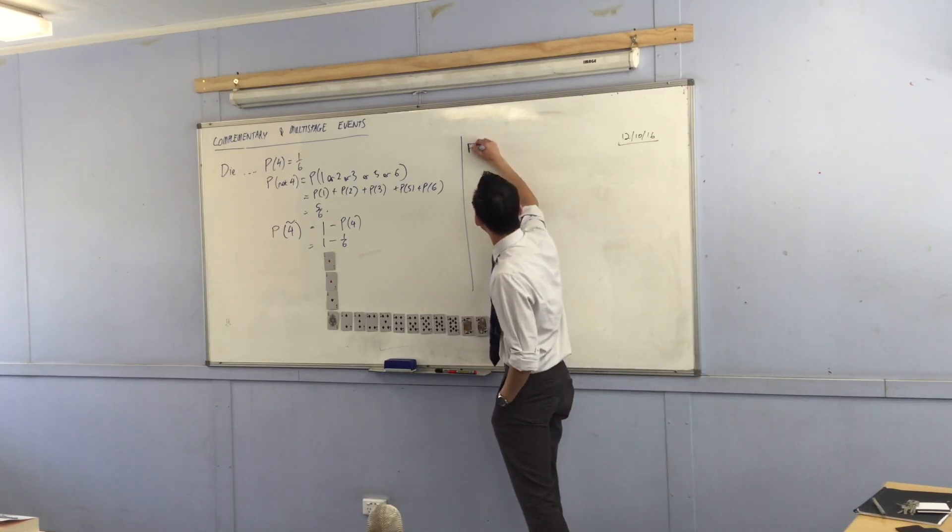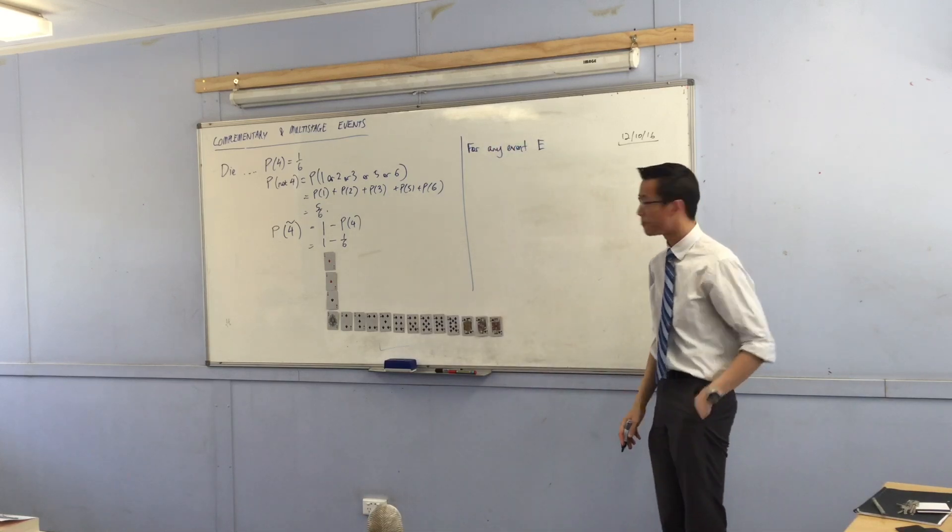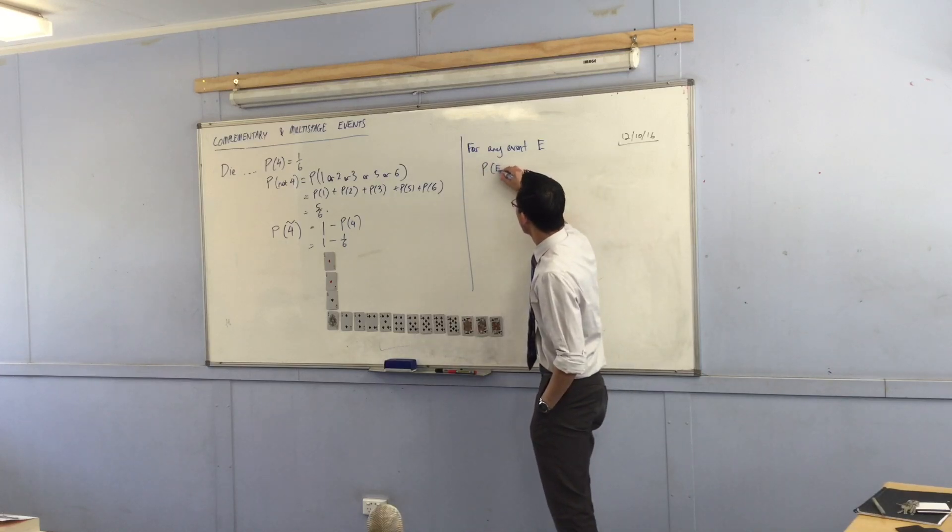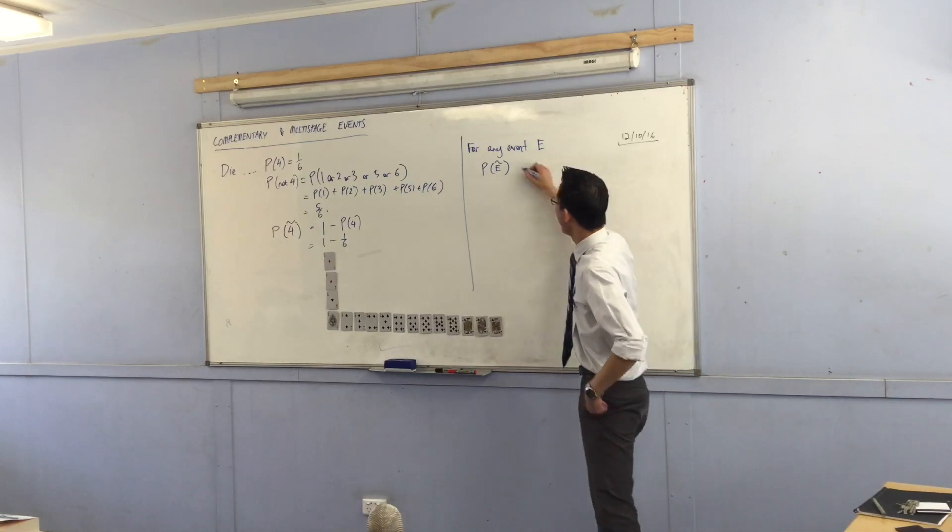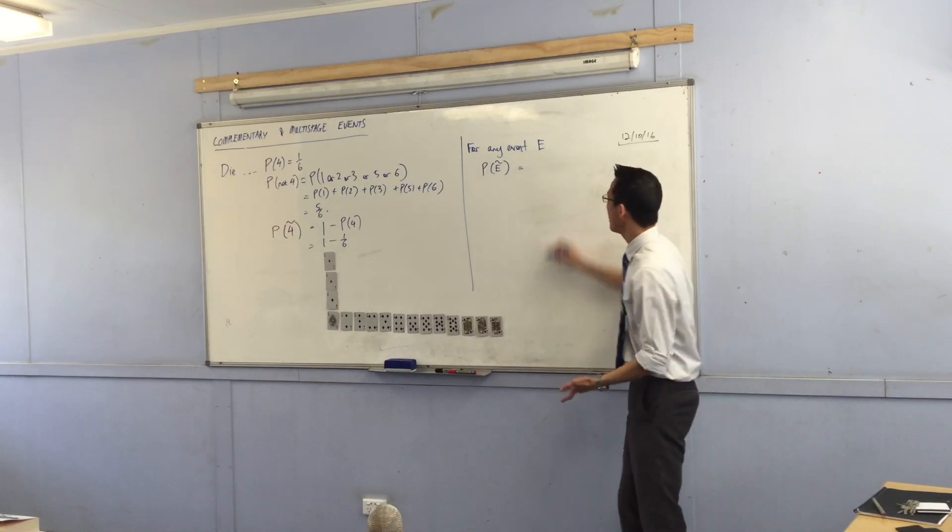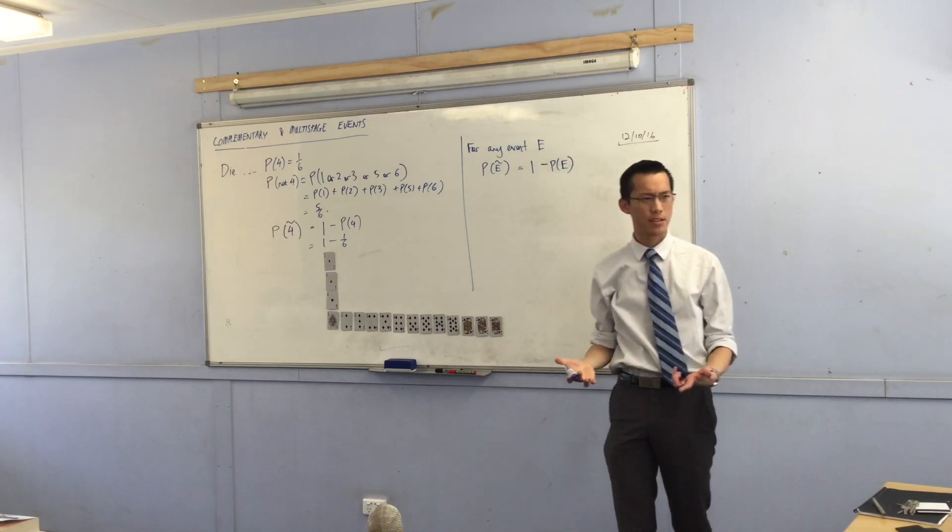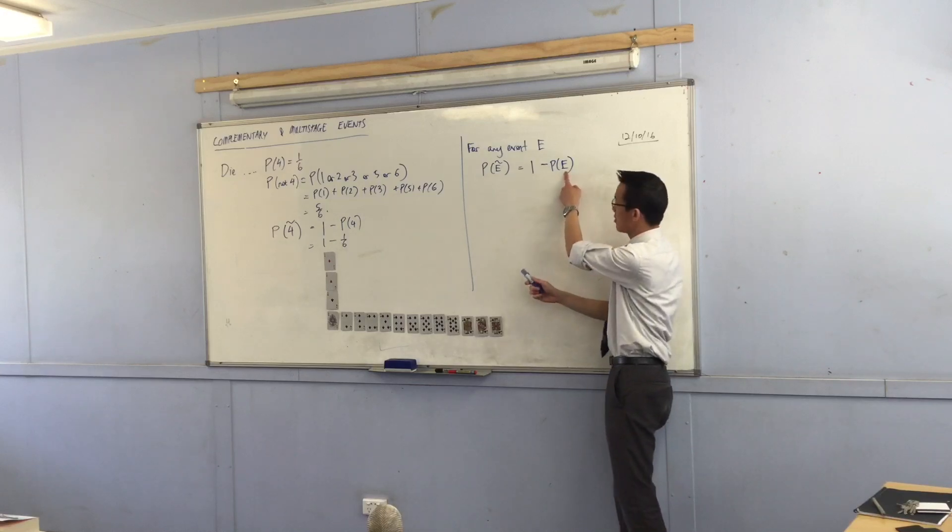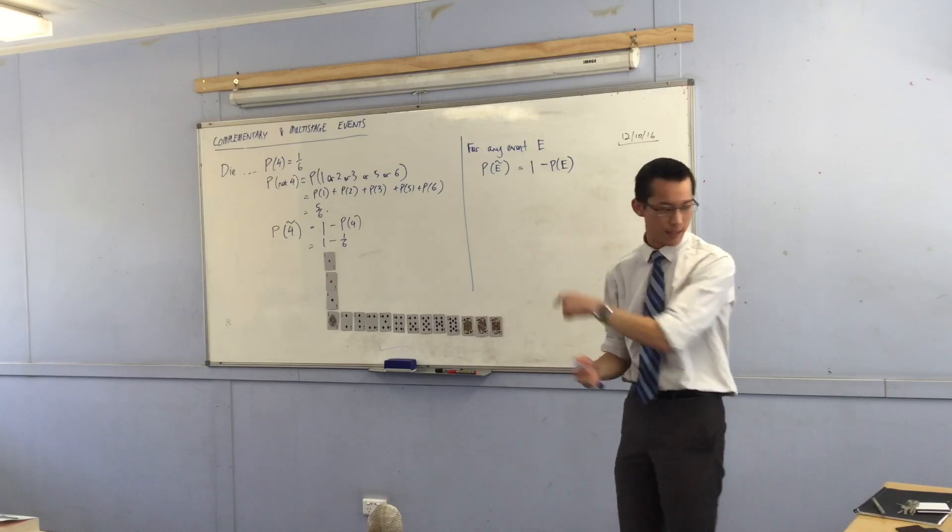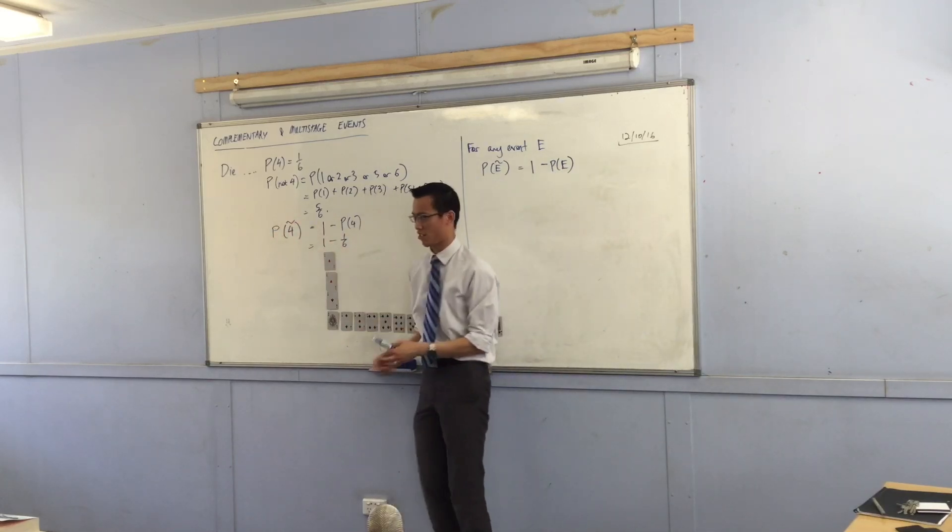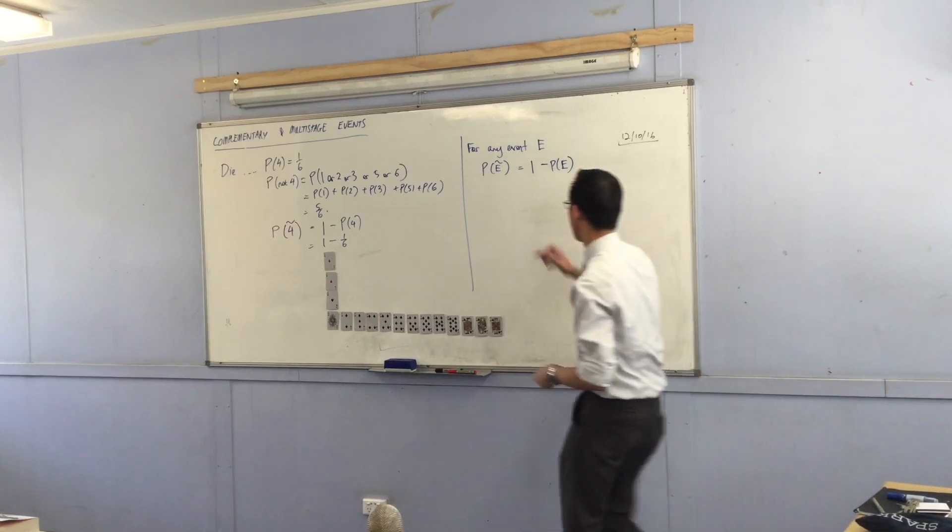For any event, and we usually name our event E, for event, the probability of that event not happening, that's the complement, it's the opposite. The probability of it not happening is one, take away the probability of it actually happening. Does that make sense? So this is the way an event and its complement, the way the probabilities match up together. Now, from that sentence, which is kind of like writing this, but not just for fours, for anything, I can get two different relationships out of that, which I'd love you to put underneath here.